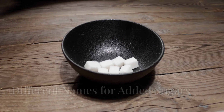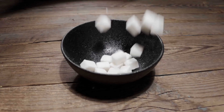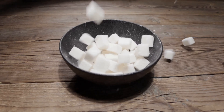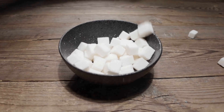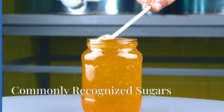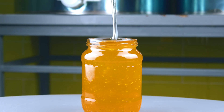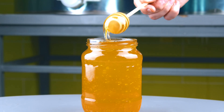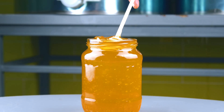Now let's talk about the many disguises of sugar. Here are some tips to help you identify them more easily. First, we have the obvious ones, like honey, jaggery, and molasses. These are natural sweeteners that many of us recognize.